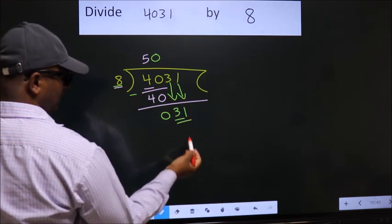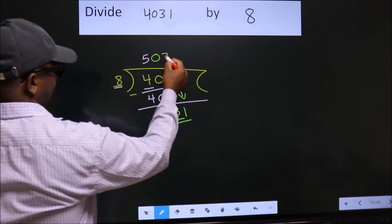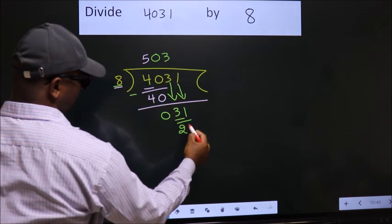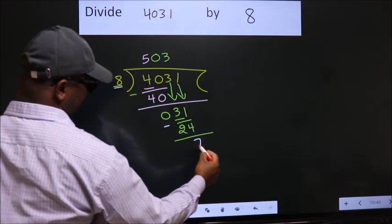So, 31. A number close to 31 in the 8 table is 8 threes, 24. Now, we subtract. We get 7.